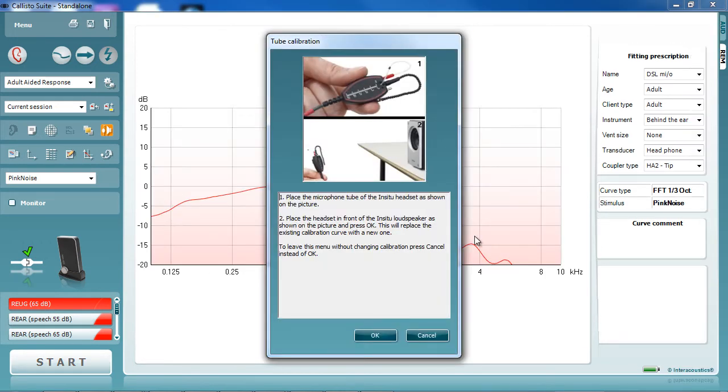Instructions now appear on the screen. The probe tube must be connected to the in situ headset and the microphones must be aligned as shown in image 1. Secondly, the in situ headset must be placed in front of the speaker as shown in image 2. Next, press the OK button. This begins the calibration process.